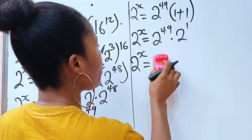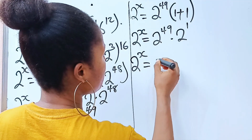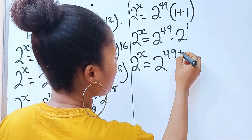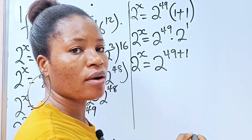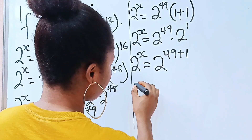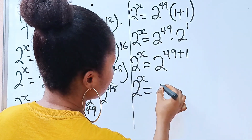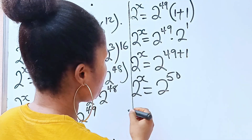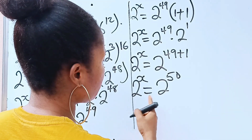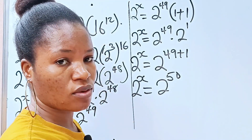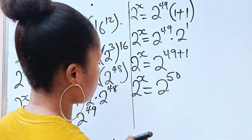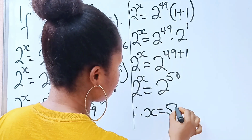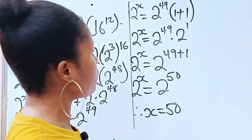Recall our law of indices — we have the same base here, so we pick one base and add the powers. So 2 to the power of x is 2 to the power of 50. Once you have the same base, equate the powers. Therefore x is equal to 50.